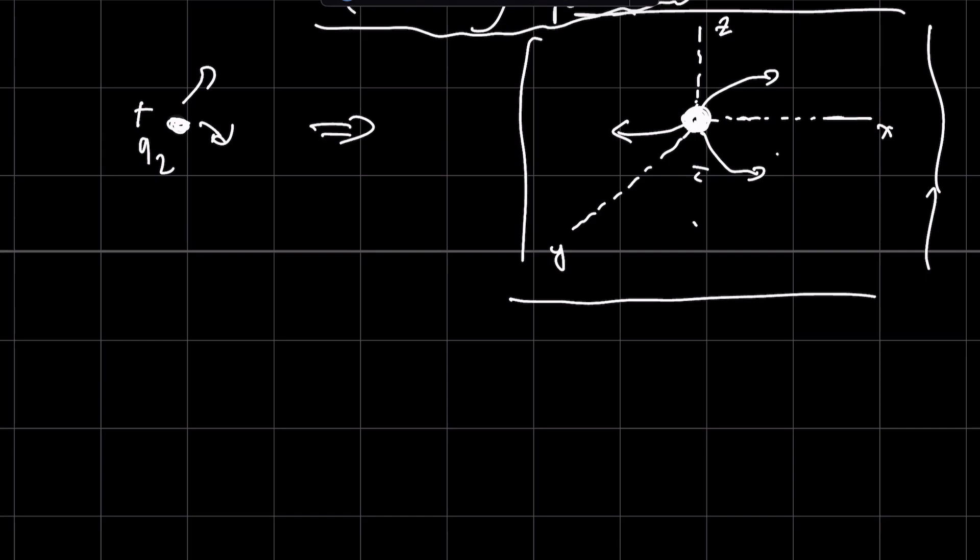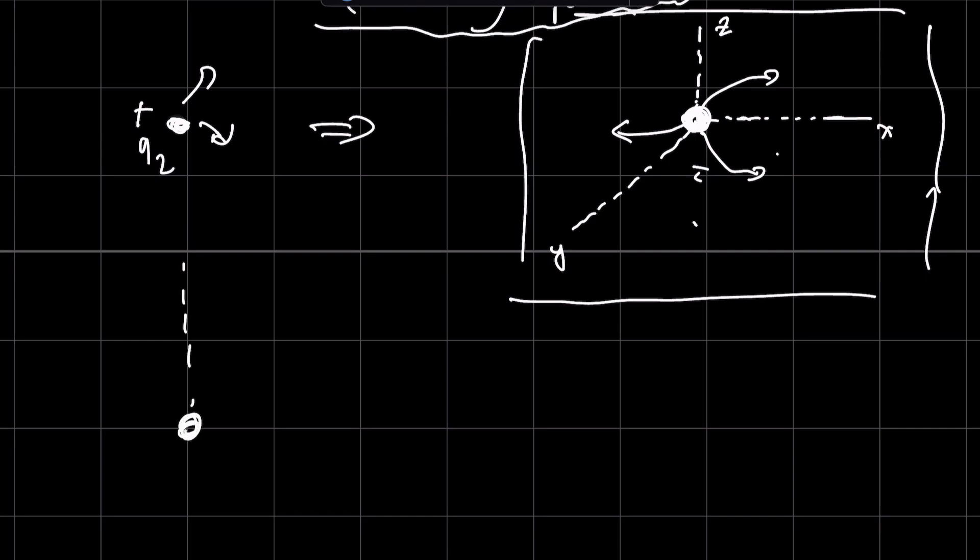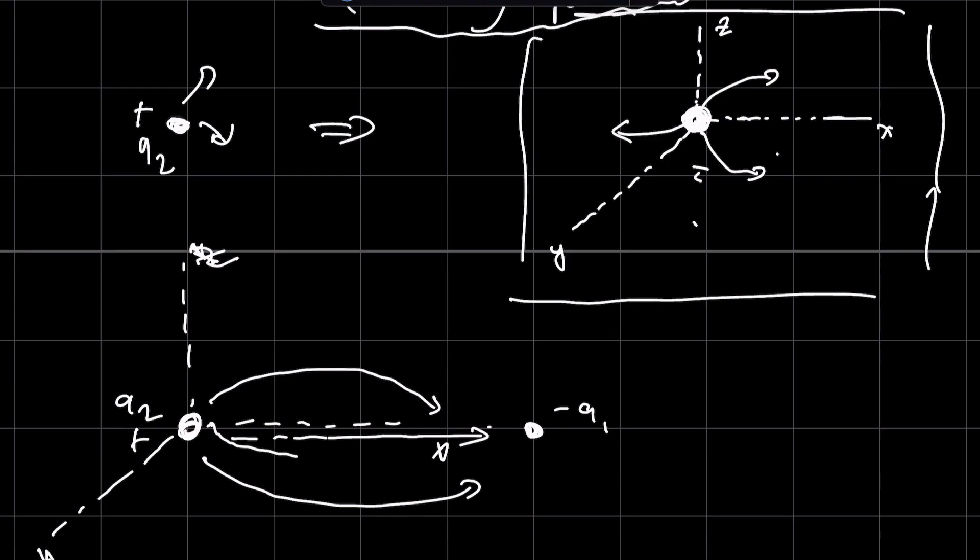The most important feature of the electric field is that it must be considered in three dimensions. For example, if we place a positive charge q2 at the origin of a Cartesian coordinate system, and a negative charge q1 on the x-axis, the electric field lines will be observed in the x, y, and z directions.